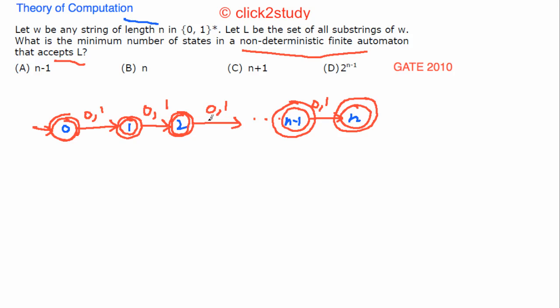Out here you are accepting - in the beginning you are accepting any string of length n, now you are accepting any substring of that string of length n. And if you see the number of states, they go from 0 to n, which is n plus 1. And that's why C is the correct choice.